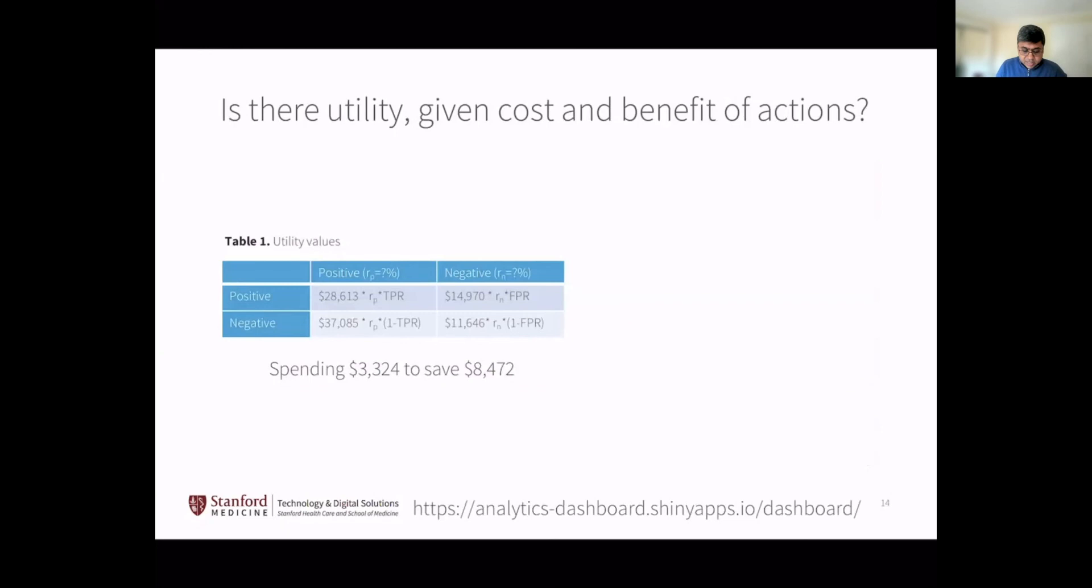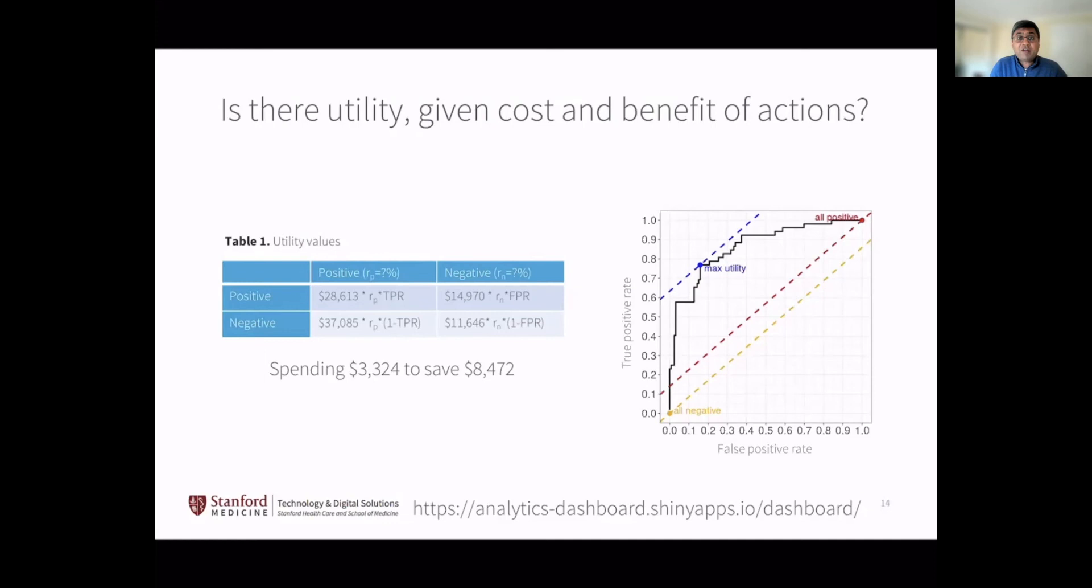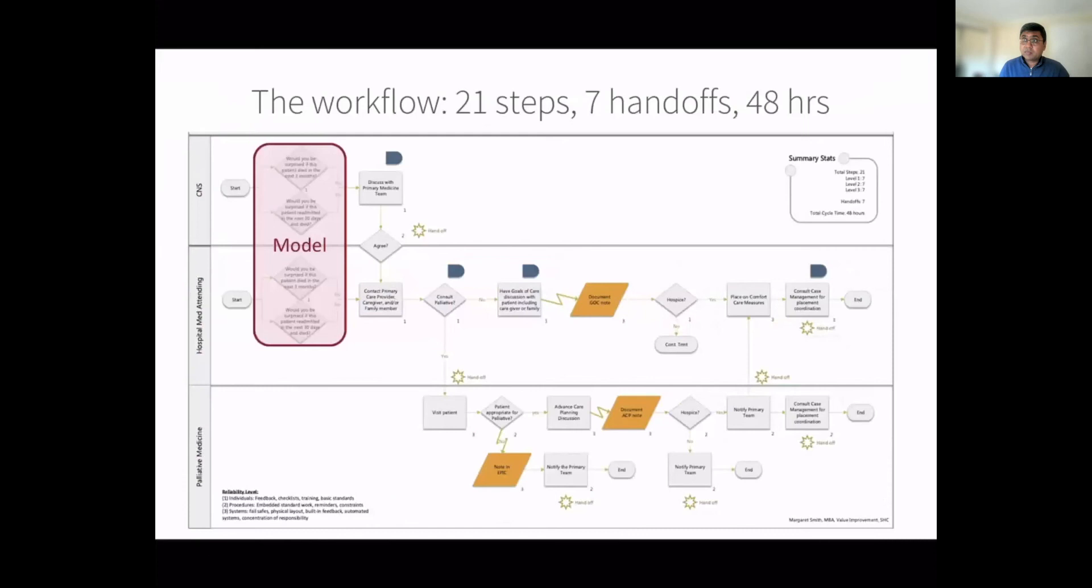Here's the workflow. The model is placed in this red box. The workflow has 21 steps, 7 handoffs, 48 hours. It's really important to map out this whole process because your model might function perfectly, but if the workflow fails at one of these orange spots, you're not going to get any net benefit.